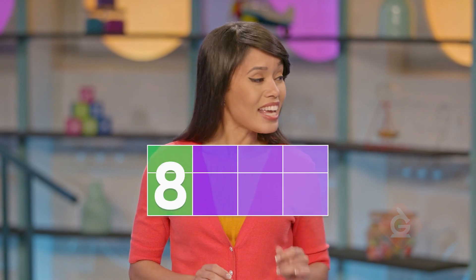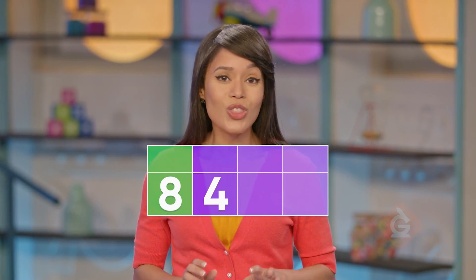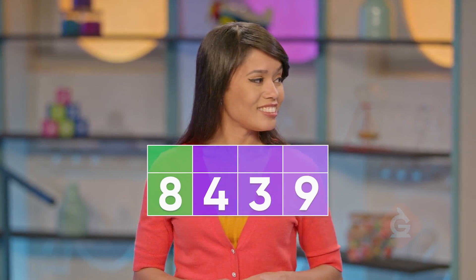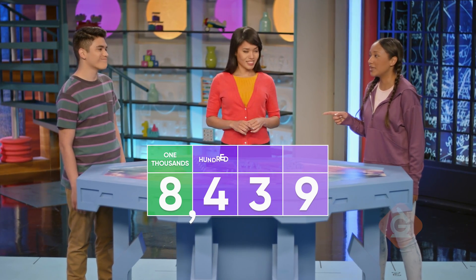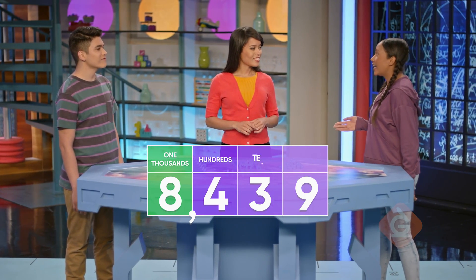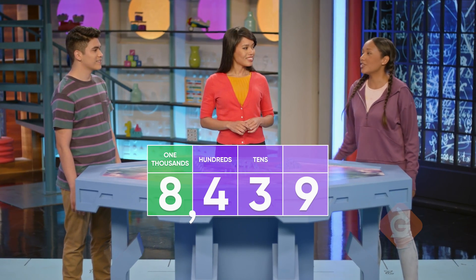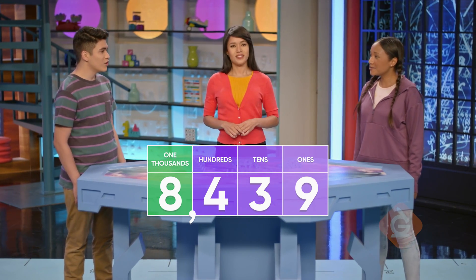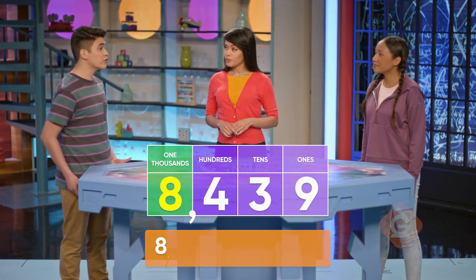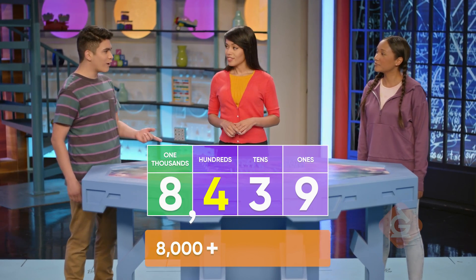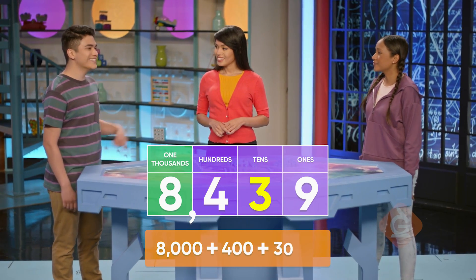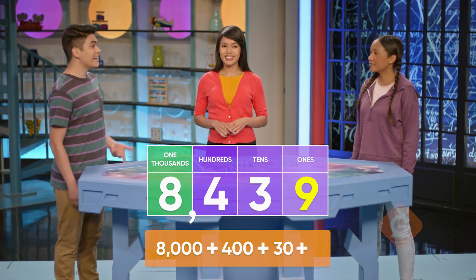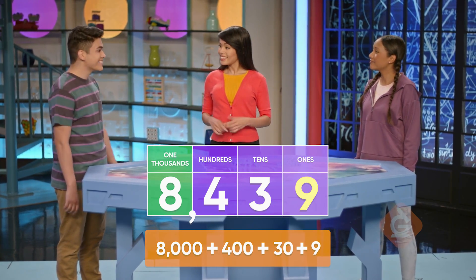Now, what can you tell me about the digits in the number 8,439? The 8 is in the 1000s place, the 4 is in the 100s place, the 3 is in the 10s place, and the 9 is in the 1s place. Which means the 8 has a value of 8,000, the 4 has a value of 400, the 3 has a value of 30, and the 9 has a value of 9. Great job!